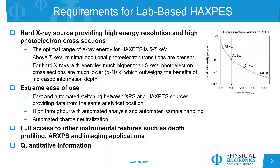HAXPES is not new and has been performed at synchrotrons for many years. These light sources have the advantage of tunable photon energies and very high flux, but there are several drawbacks. Time on a beamline is competitive and requires a lot of preparation for a successful experiment. Charge neutralization and quantification are also difficult, limiting the types of experiments a user can perform. Therefore, a lab-based HAXPES instrument can provide users a more accessible system that is easy to use and highly automated, with features commonly found in current XPS instruments such as charge neutralization, imaging, and depth profiling.